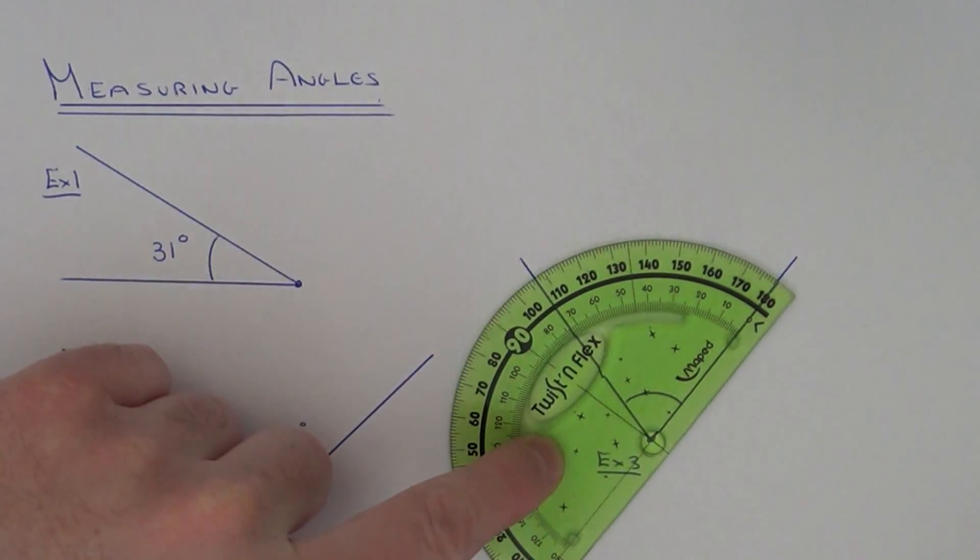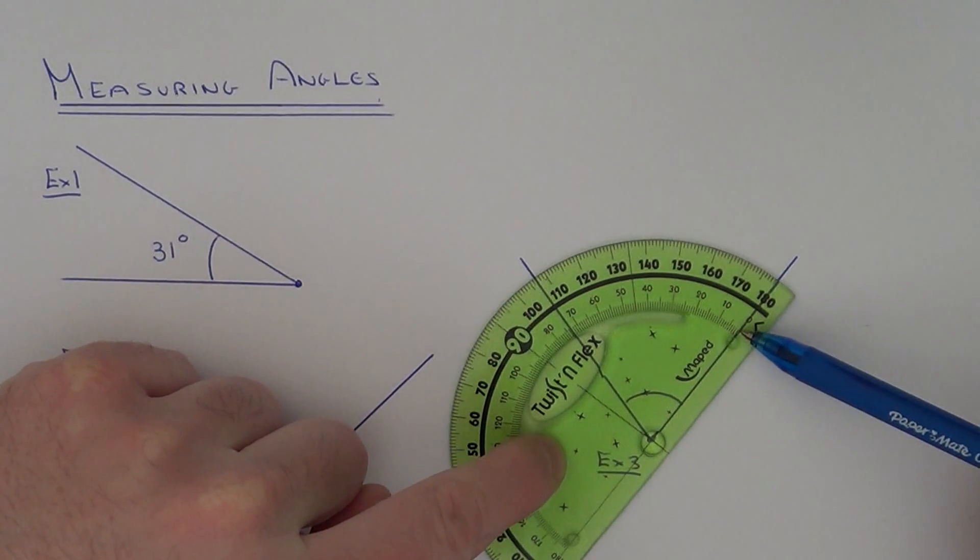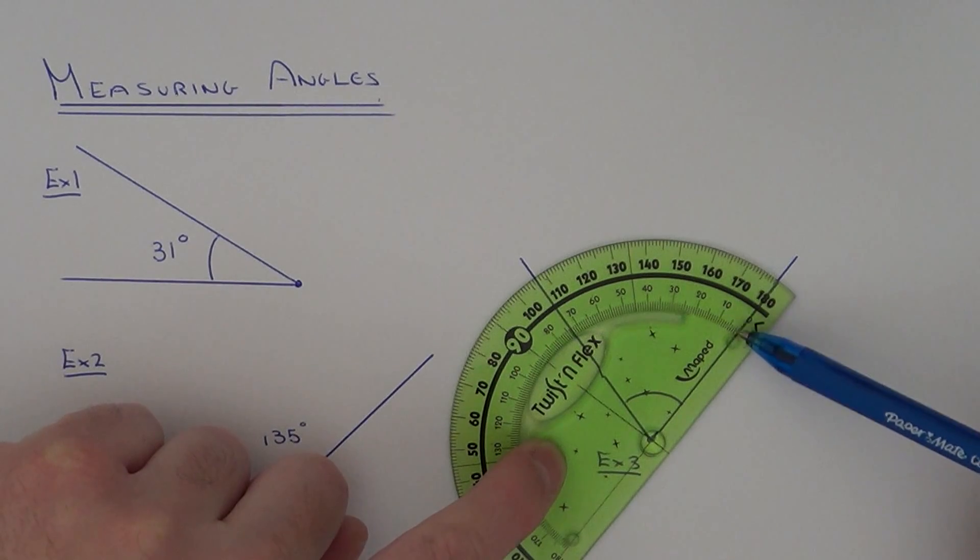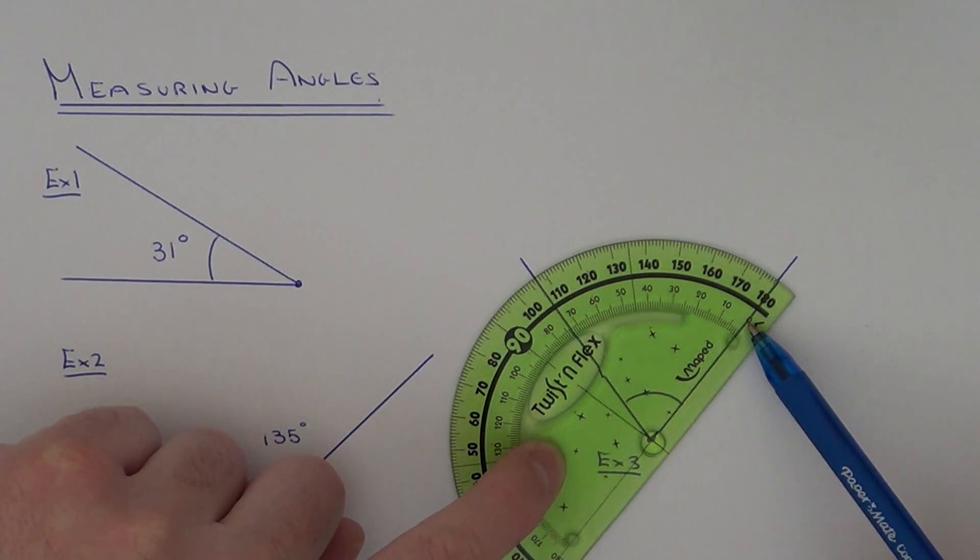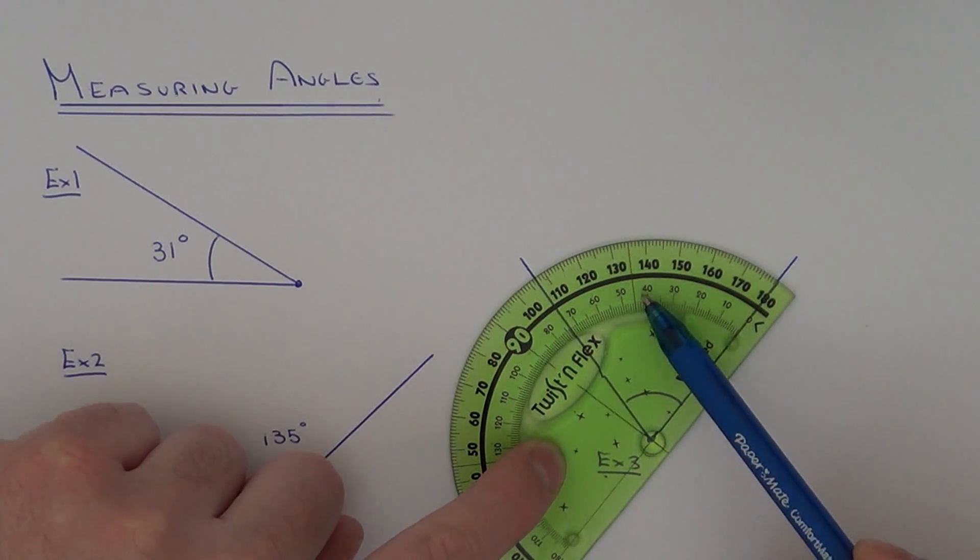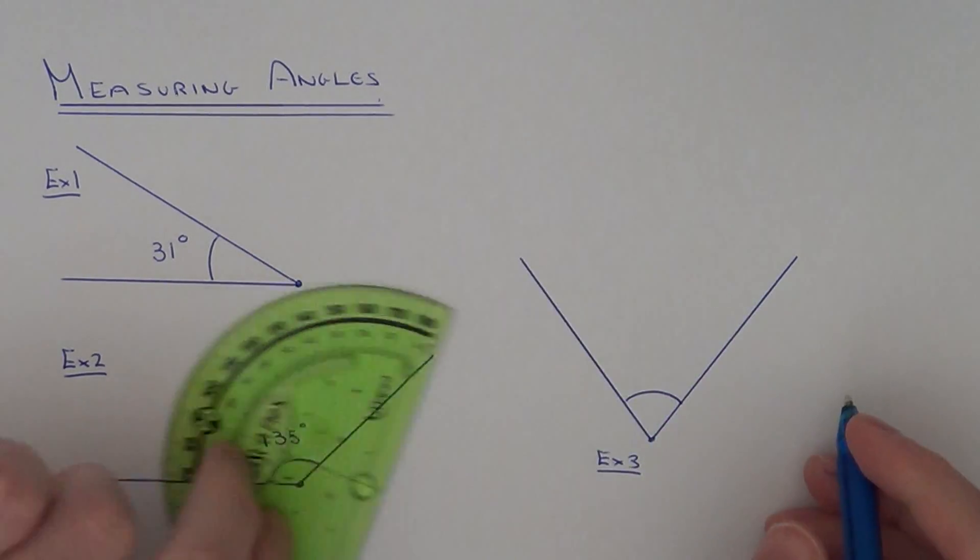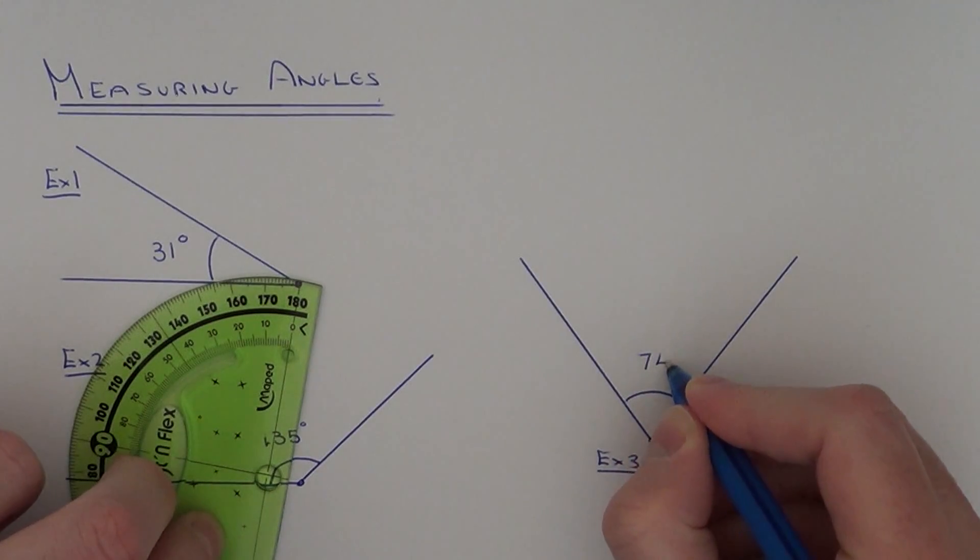Notice this time it's the inside zero which is on the line of the angle, so we're going to use the inside scale this time. Again follow it around from zero: 10, 20, 30, 40, 50, 60, 70, 71, 72, 73, 74. So this angle is 74 degrees.